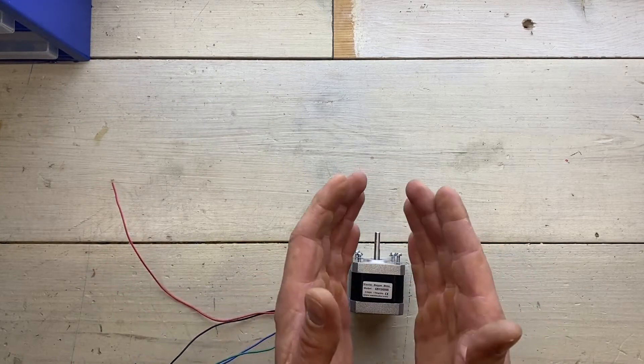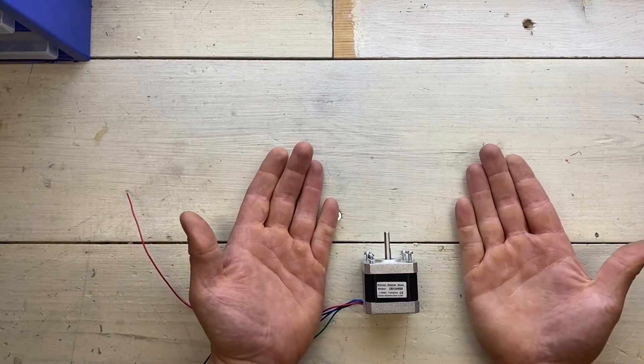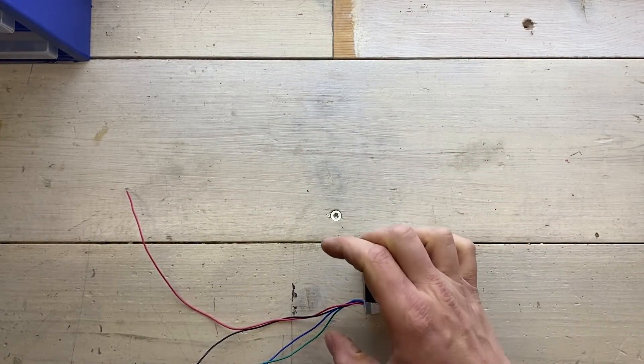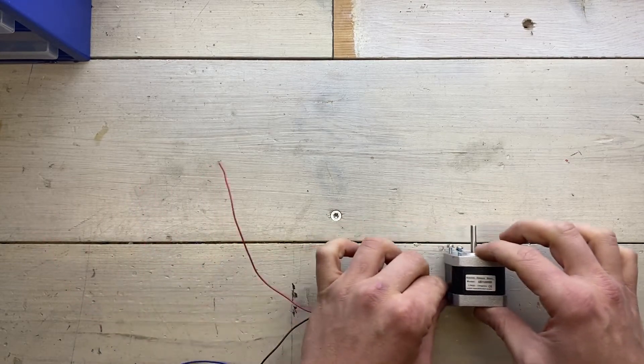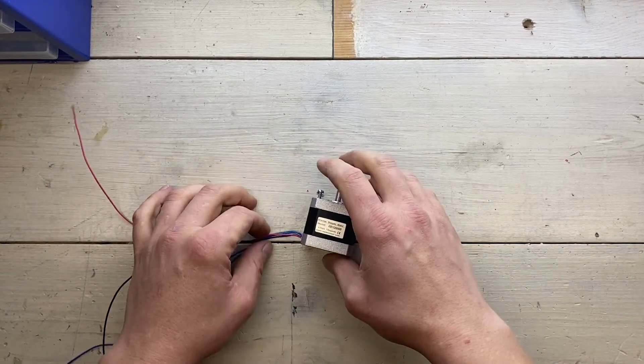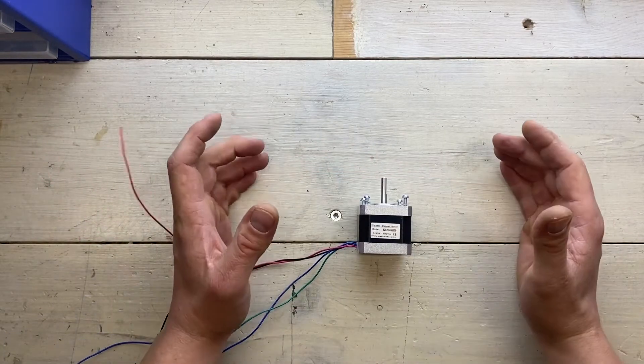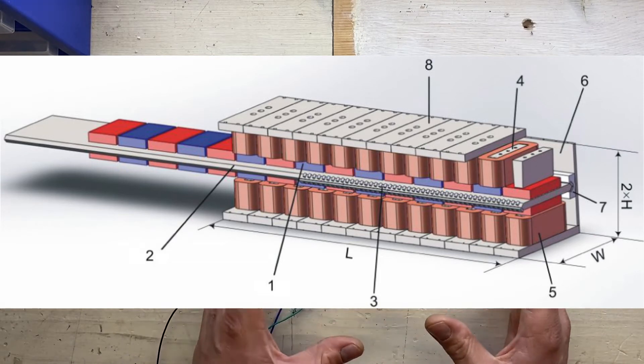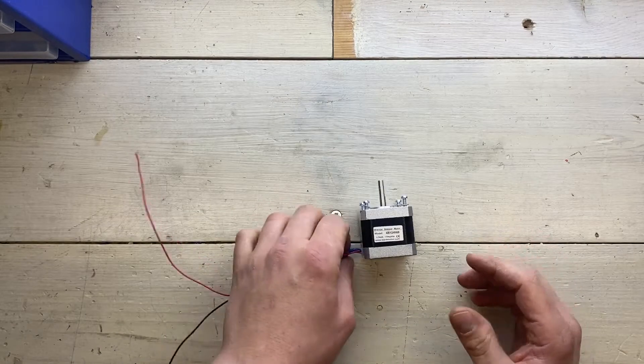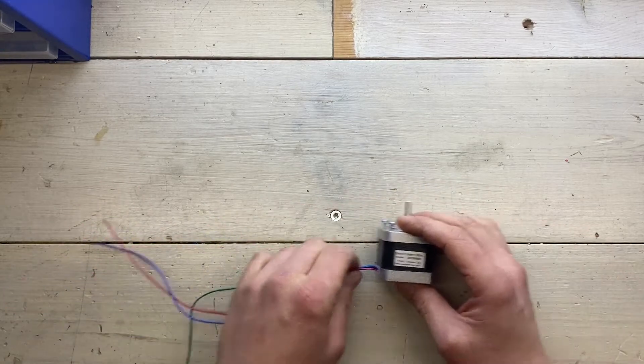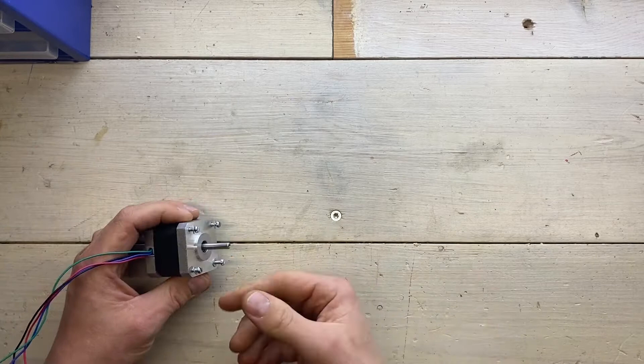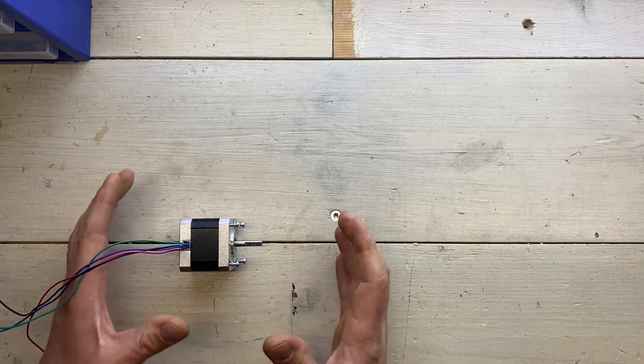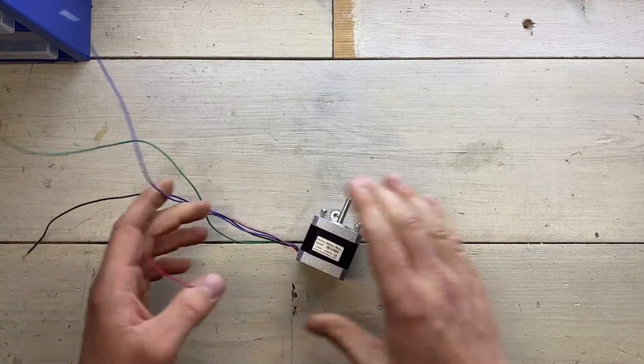So imagine you took this motor and cut through it halfway and then fold it out so all the coils were facing upwards. And then instead of having a rotating shaft you had a sliding metal carriage that were pulled along by the magnetic coils. I'm gonna see if I can pull up a picture of this here. What's common for both types of linear actuator is that they convert electrical energy into linear motion.